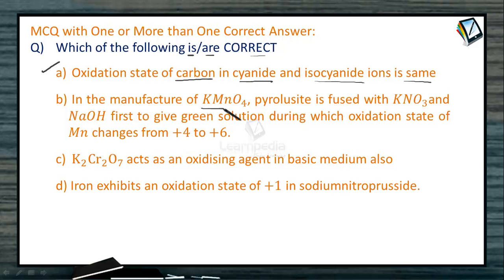In the manufacture of KMnO4, pyrolusite is fused with KNO3 and NaOH first to give green solution, during which oxidation state of manganese changes from +4 to +6. In green solution of manganate, manganese is +6, and pyrolusite is impure MnO2 in which manganese is +4. So +4 to +6 is right.